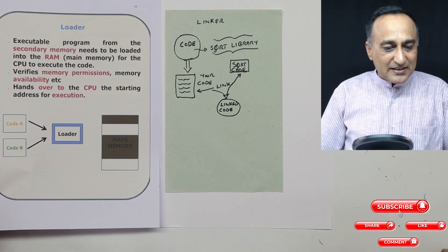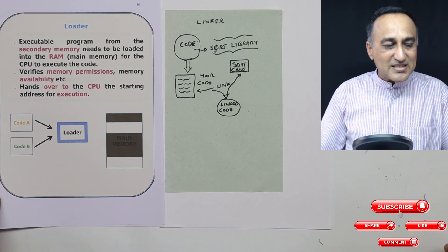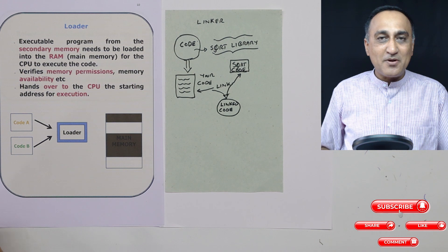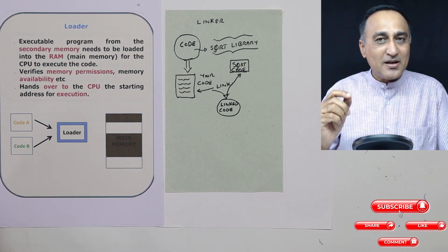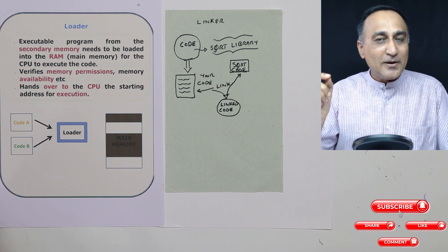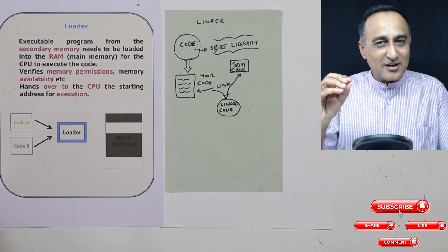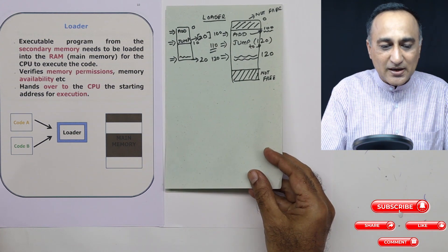Now once it is linked, the code cannot run. Even after linking, the code is still available on the hard disk, it is not in your main memory. In order for the code to run, the code from the secondary memory should be transferred onto the main memory. You may think this is very simple, just cut and paste it. But there are certain small problems which I will explain to you using this particular example.